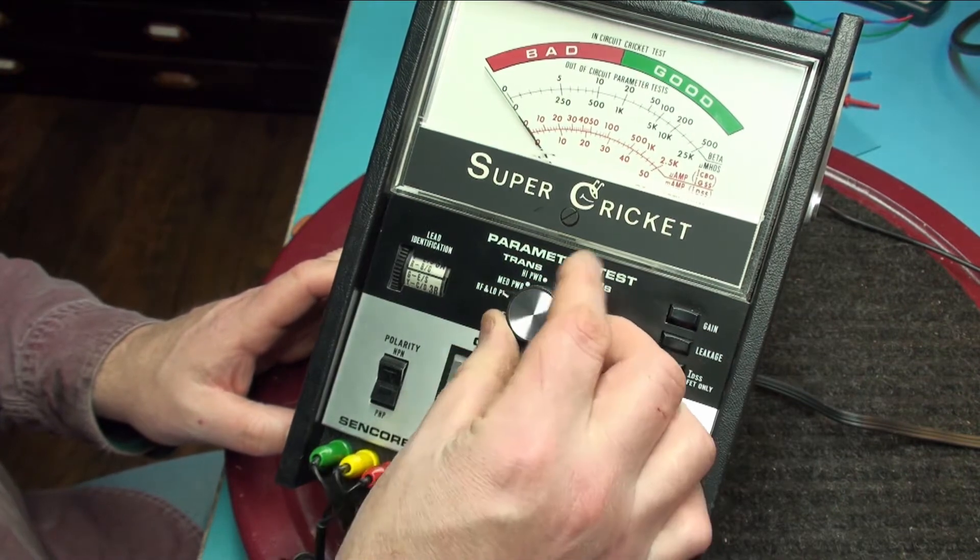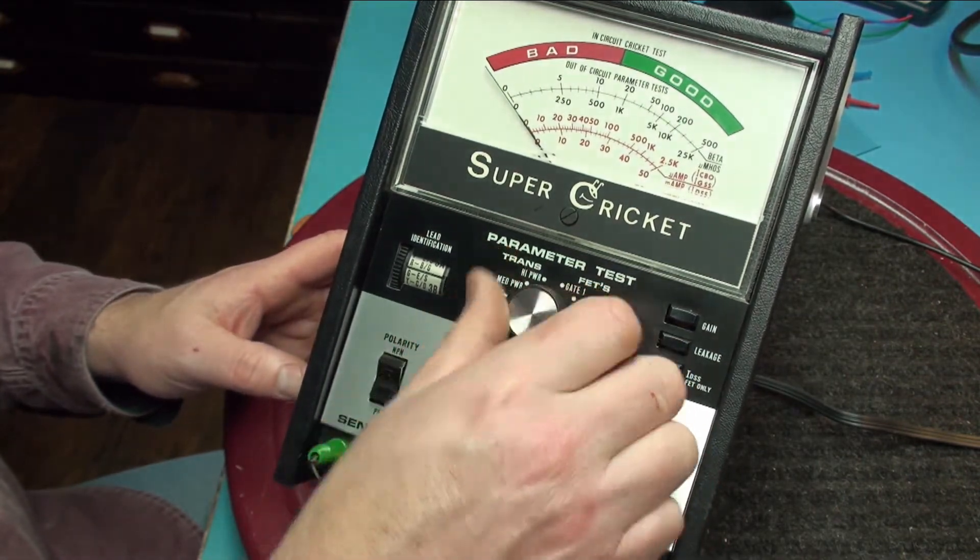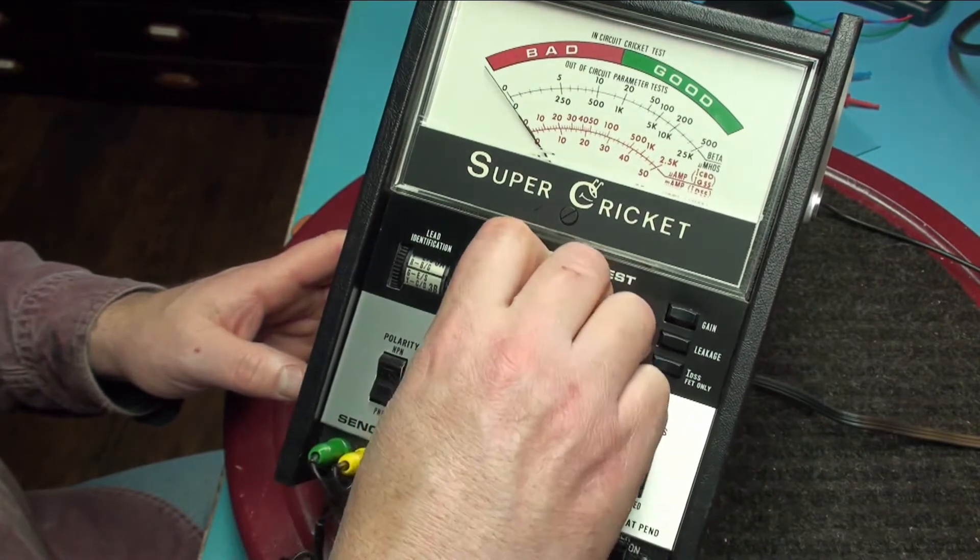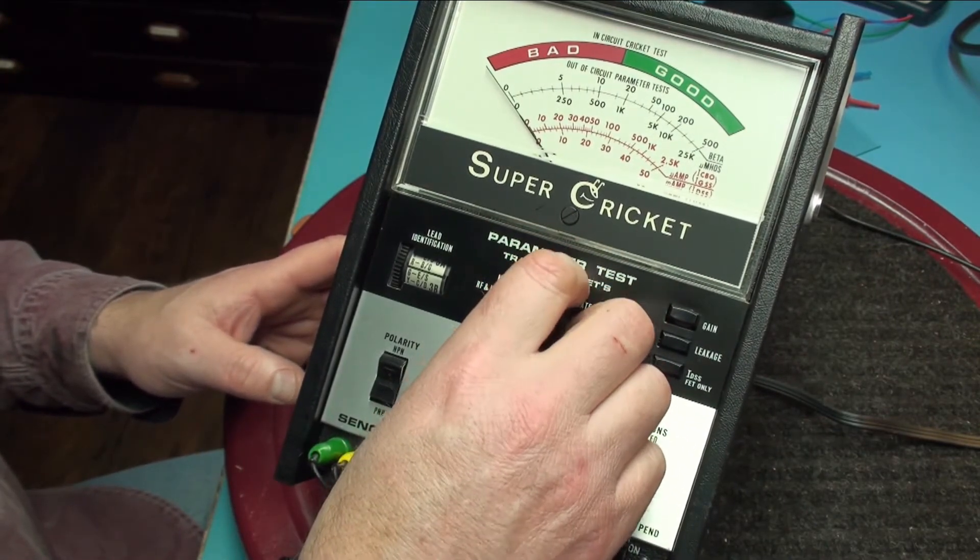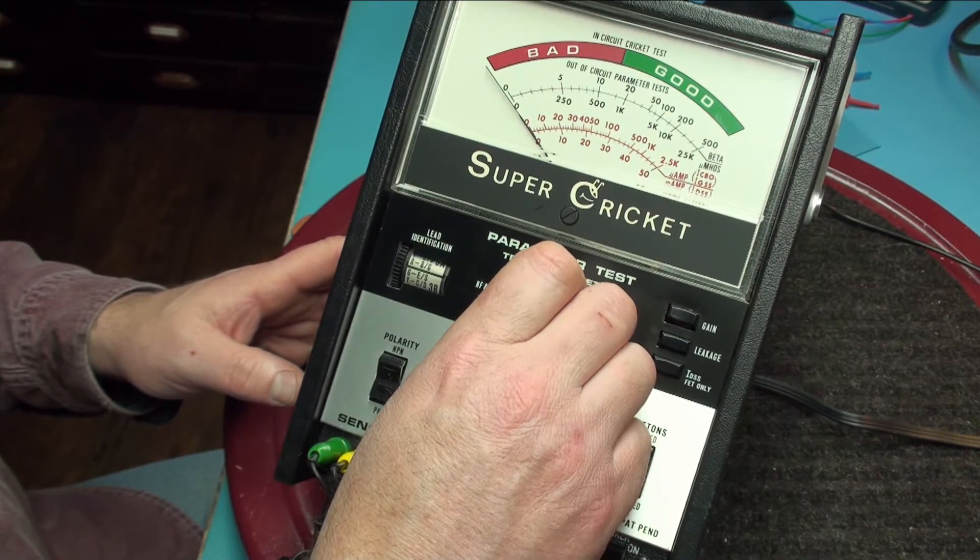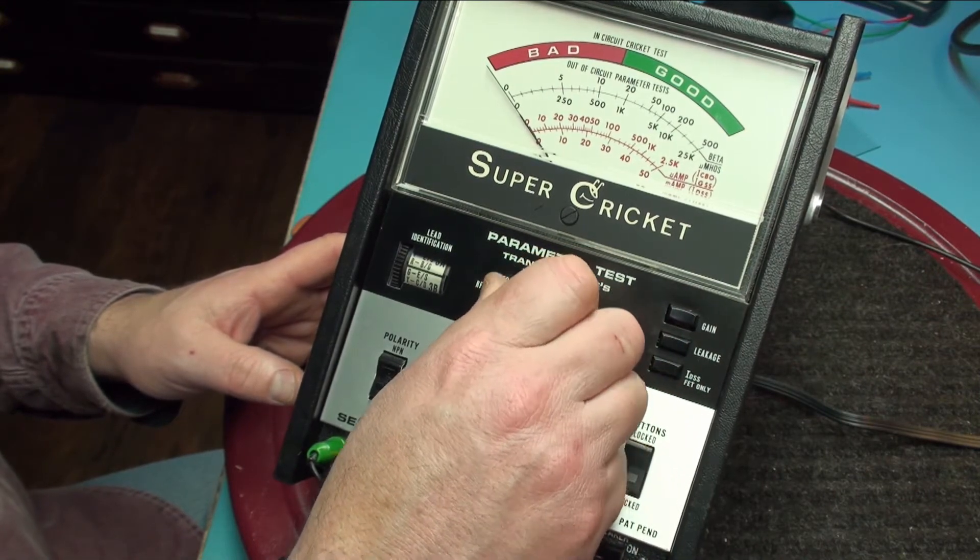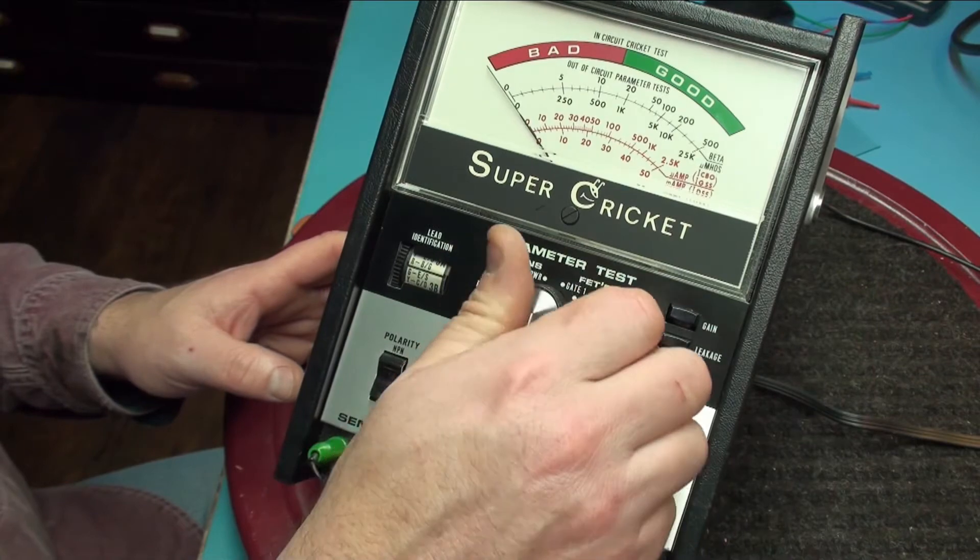Here you have your test parameter switch. So you would select your power level when you're doing gain testing. And you have the FETs gate switches over here.